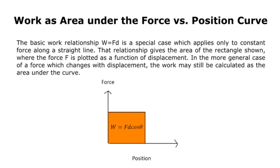Lastly, work is the area under the force versus position curve. The basic work relationship W equals FD is a special case which applies only to a constant force along a straight line. That relationship gives the area of a rectangle shown where the force F is plotted as a function of displacement. In the more general case of a force which changes with displacement, the work may still be calculated as the area under the curve. That ends our lesson for today. Have a nice day.